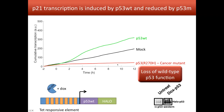Another way to overexpress p53 is to use a drug called nutlin. Nutlin inhibits the degradation of p53, leading to accumulation of p53 protein in the cells. When we increase the p53 concentration with nutlin, we see a very similar effect to p53 overexpression — and even a stronger effect — with production of much more p21 mRNA than in mock-treated cells.